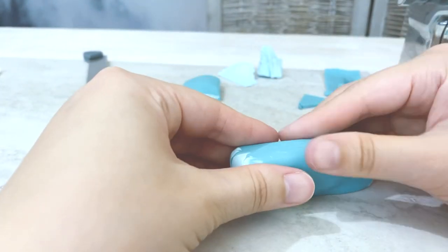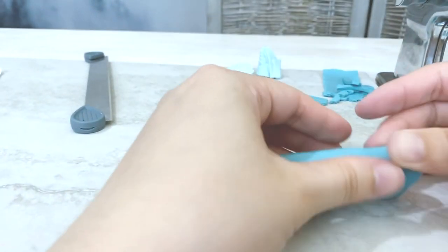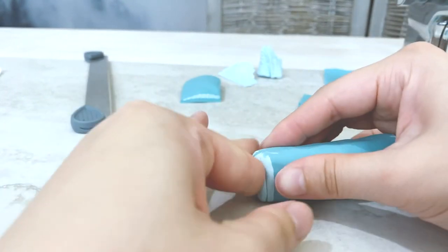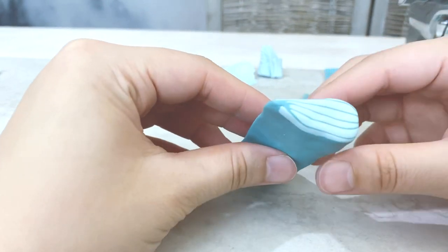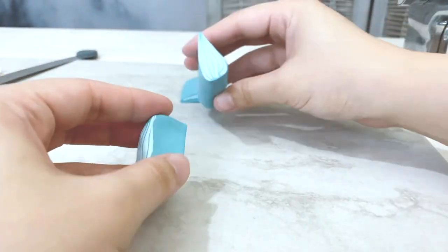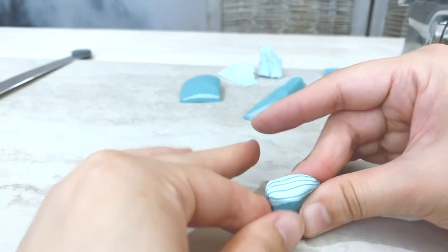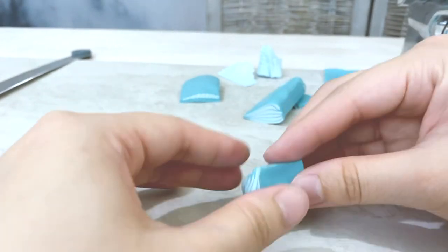And I made the top a bit pointier to create sort of a teardrop or almondy shape. I'll go with almondy since it kind of reminds me of an almond. Then I cut about 1 fourth of it off. I'm just sort of eyeballing it here. And I'm going to create a smaller almond so I just reduce it.